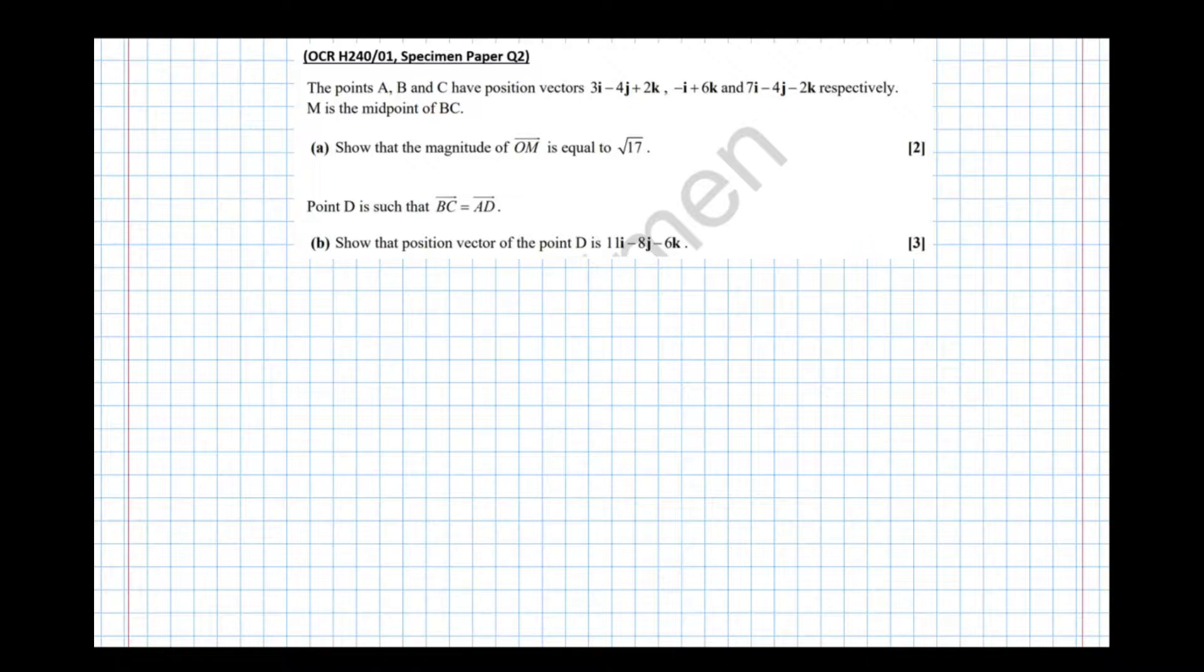So it tells us the points A, B and C have those position vectors so a good thing to do exam technique wise is to write them out in column format. So A has position vector 3, minus 4, 2. B has minus 1 and notice there's no J component that means the J component is 0, 6 and C has vector 7, minus 4, minus 2.